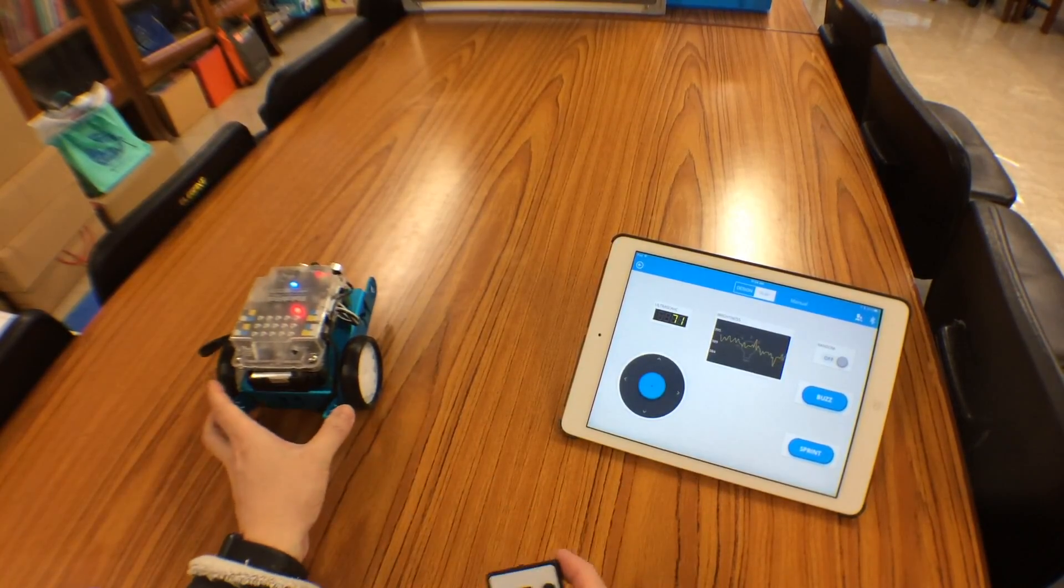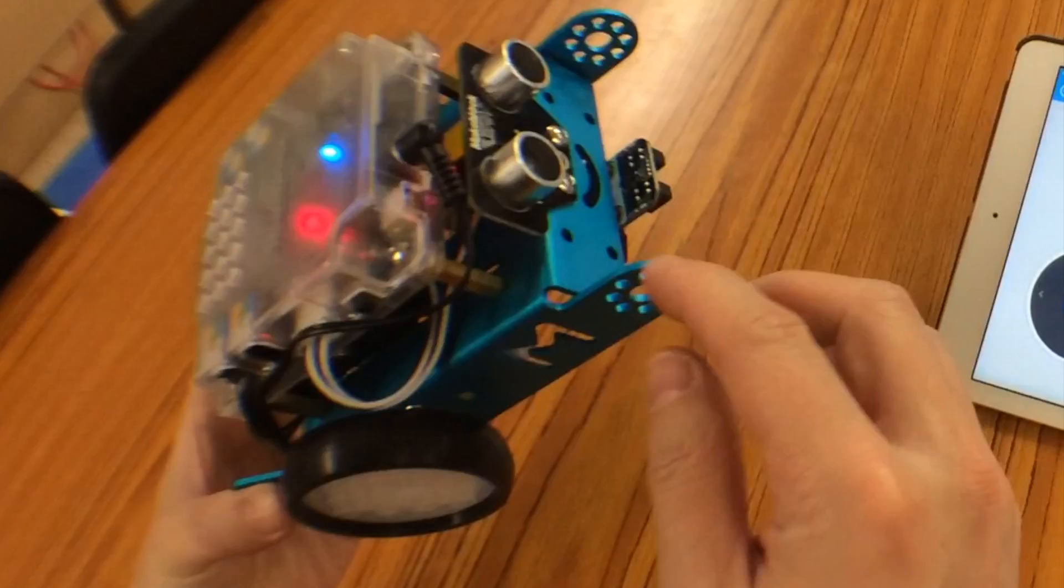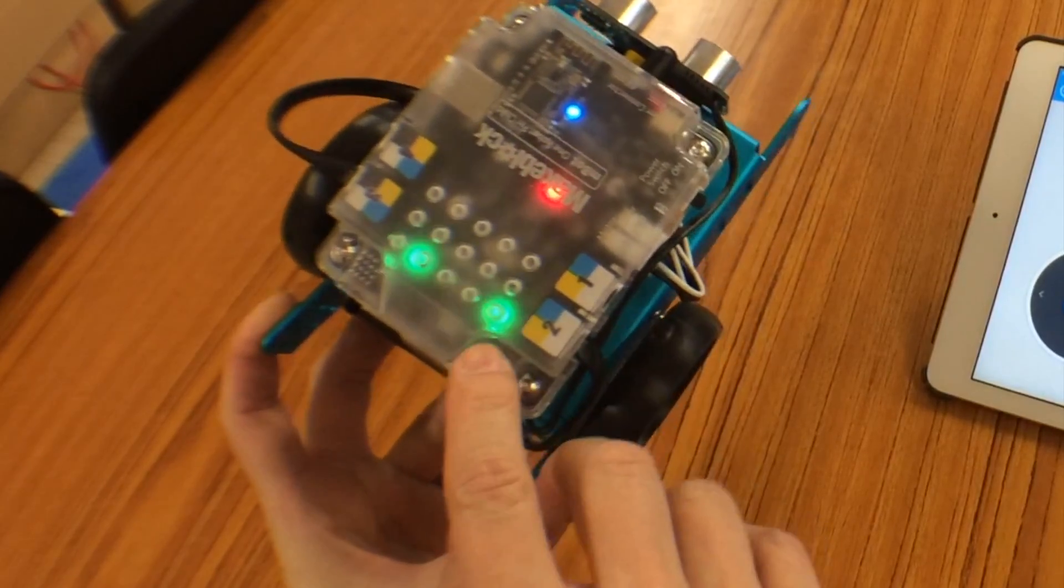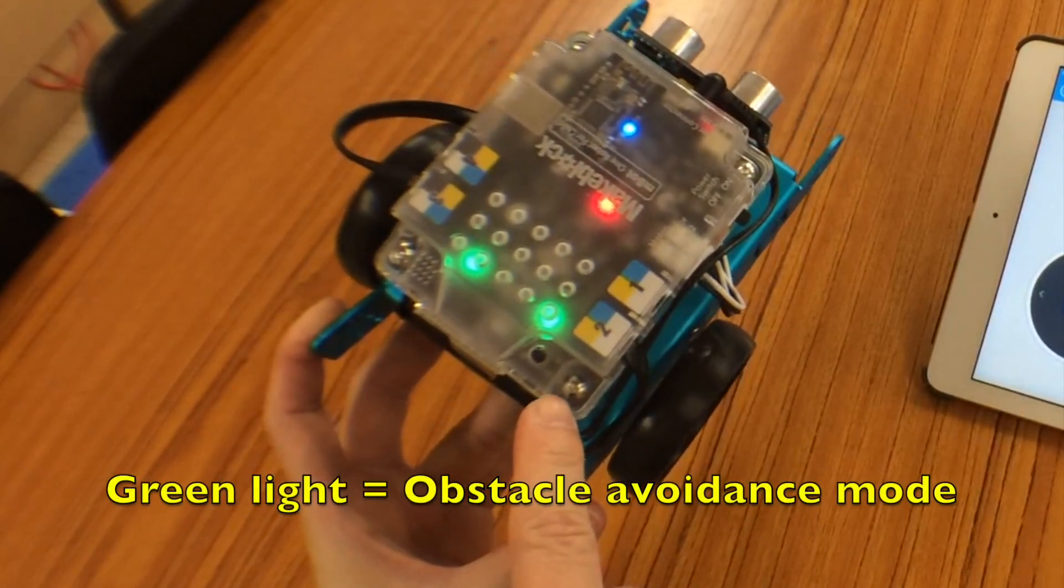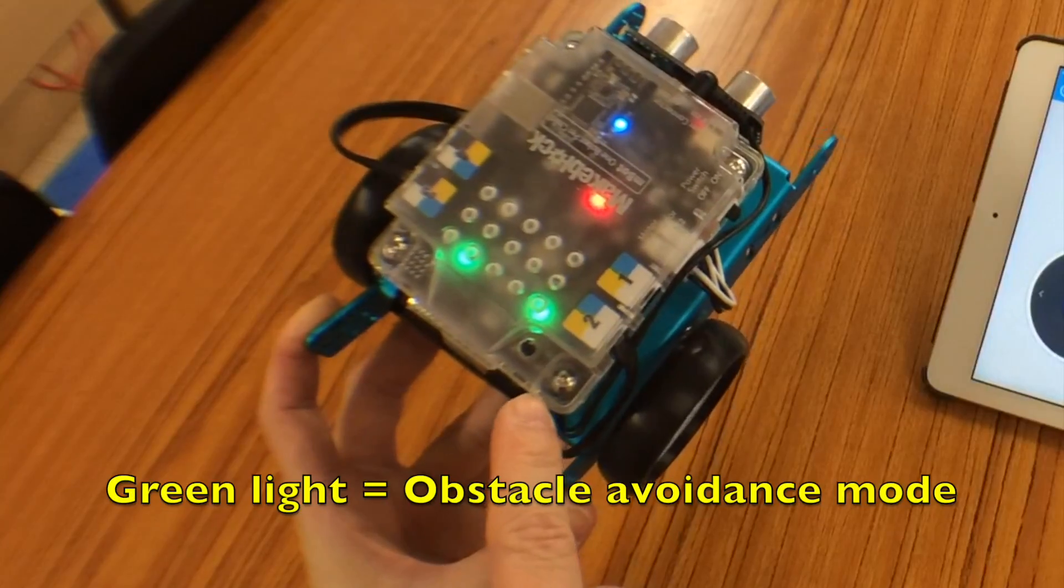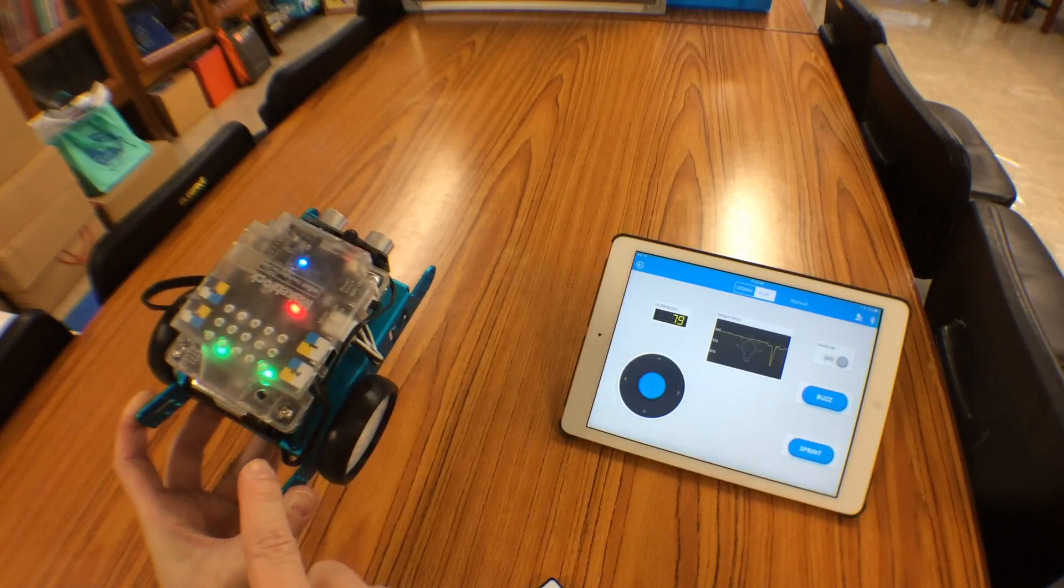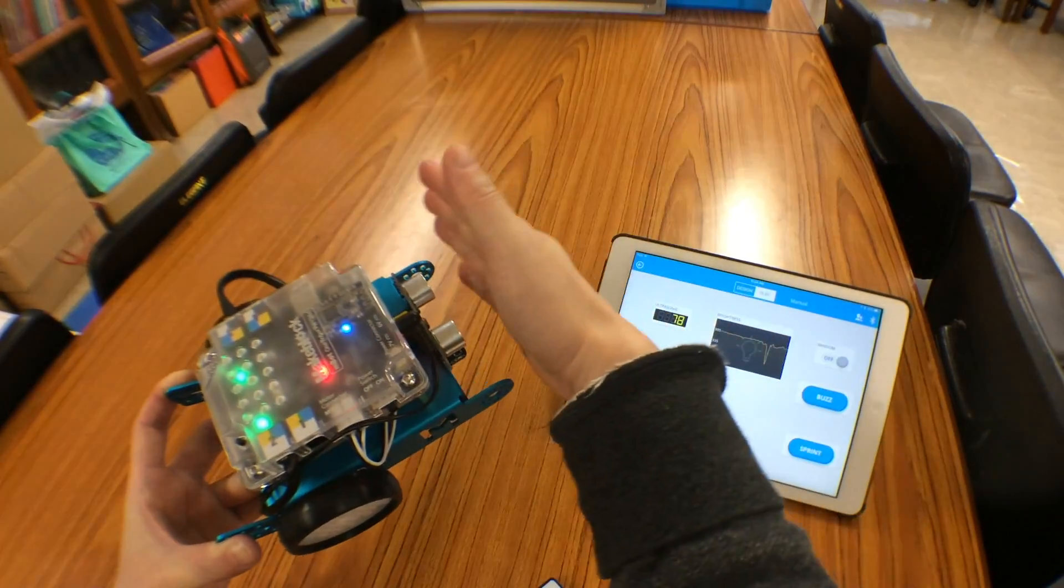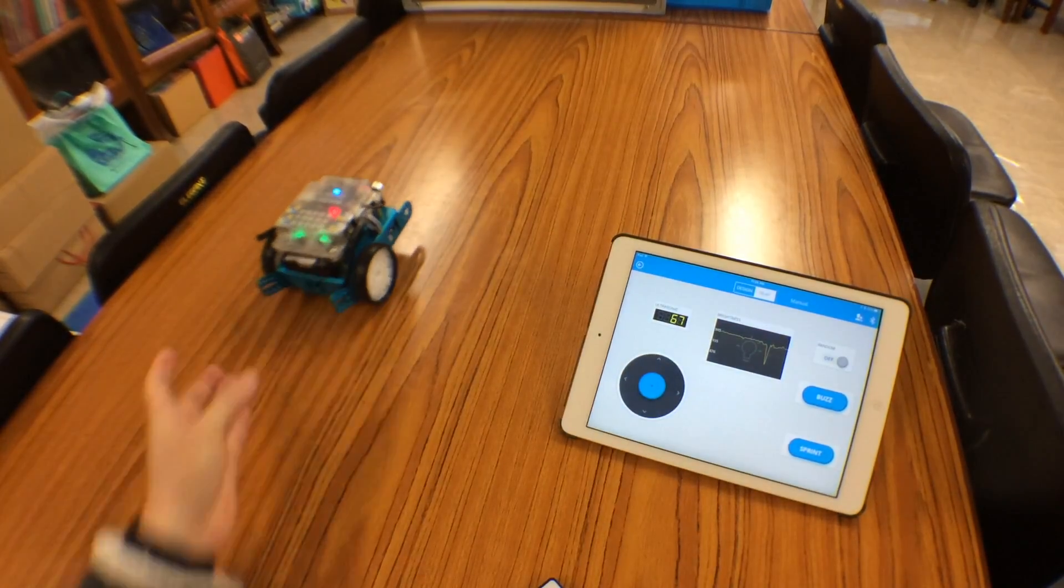If you press another button, let's say this one, you turn it to the obstacle avoidance mode. That means if the robot encounters or comes across with an object or obstacle in front, it will turn around.